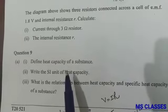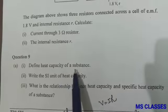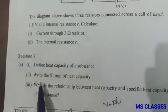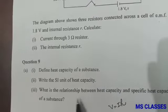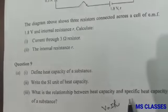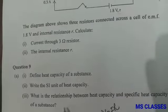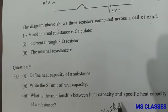Question 9(a): First part, define heat capacity of a substance. This is defined as the amount of heat energy required to raise the temperature of the whole substance by 1 kelvin or by 1 degree Celsius. Write the SI unit of heat capacity: joules per kg. What is the relationship between heat capacity and specific heat capacity? Heat capacity equals mass into specific heat capacity.